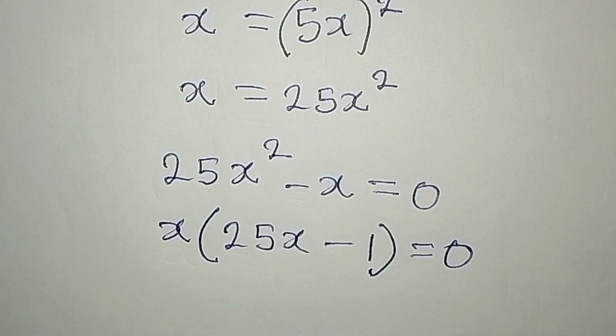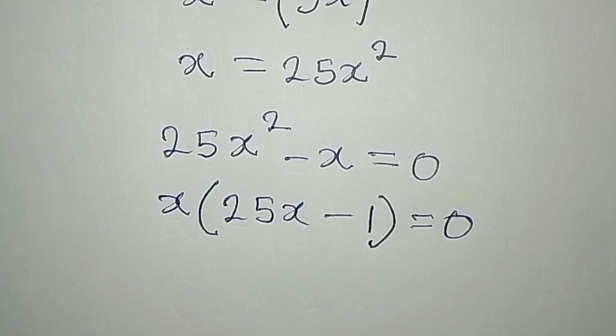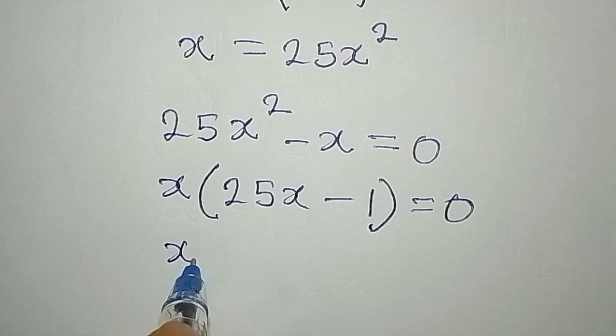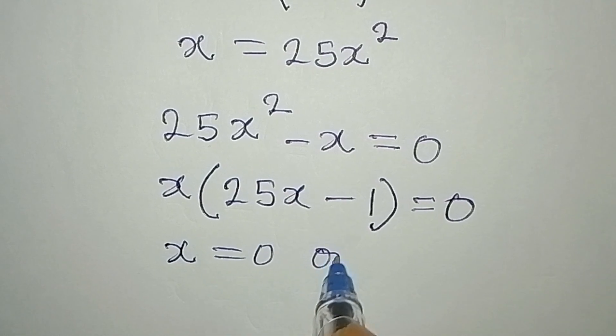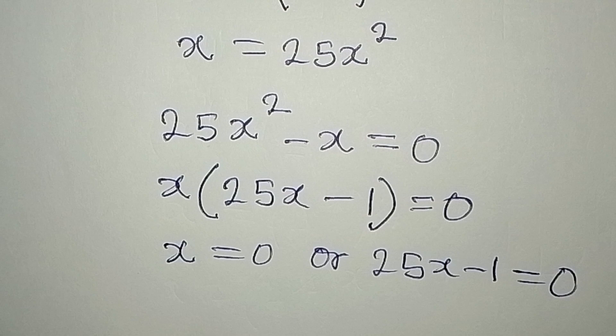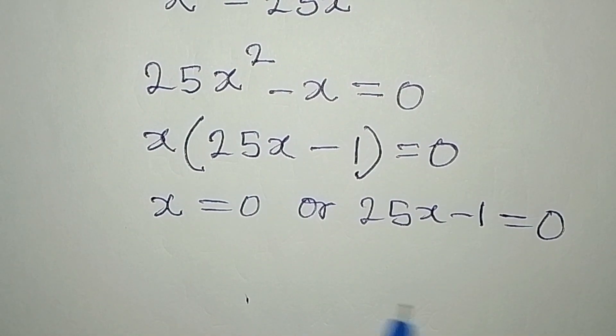Now what do I do from here? We say that it is either x is equal to zero or 25x minus 1 is equal to zero. You should know when to equate to zero like this—it is when you have zero as your solution that you can say that either of them should be equal to zero.